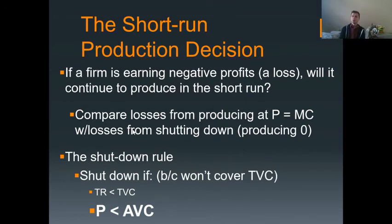Now, you will have a short-run production decision: should a firm continue to produce, even though it's earning negative profits, which is a loss? Should it continue to do that? Why would it continue to do that? Well, to minimize its losses, in other words. So what you do is you compare losses from producing at your price equals your marginal cost, your MC equals MR level, with the losses from shutting down. If you shut down in the short run, you produce nothing. But if you produce nothing, you still have your fixed costs. So you still have costs associated.